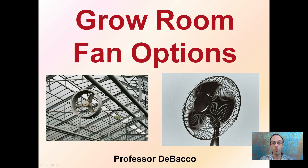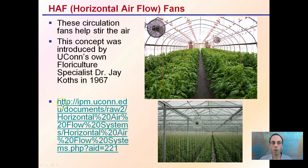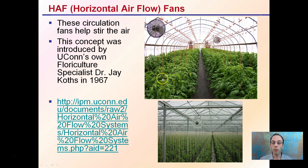Here I'm going to look at grow room fan options. We might think a fan is just a fan, but there's a very clear difference in their location and intended purpose. First off, horizontal airflow fans are the ones we see in the image here. These are circulation fans that help stir the air. The concept was introduced by UConn's own floriculture specialist, Dr. J, back in 1967 — I linked the article right here. The idea is to keep air moving above the plants. These fans aren't directed directly on the plants, but help keep that air moving, especially in tunneled structures.